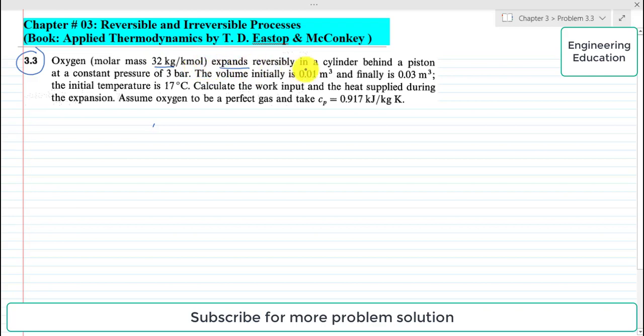The problem statement is: oxygen, molar mass 32 kilogram per kilomole, expands reversibly in a cylinder behind a piston at a constant pressure of 3 bar. The volume initially is 0.01 cubic meter and finally it becomes 0.03 cubic meter.